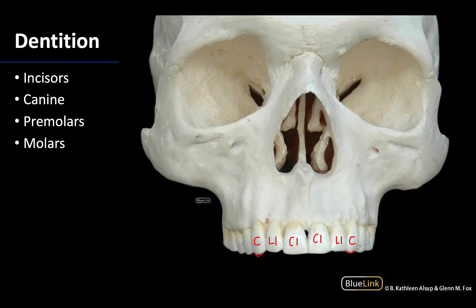Looking at this anterior view, the other teeth become a little harder to see, but you will have two premolars and then three molars in the back. So if we were to go through the quadrants, you will have two incisors, one canine, two premolars or bicuspids, and three molars — keeping in mind that the third molar is what we colloquially refer to as the wisdom teeth and are often removed.